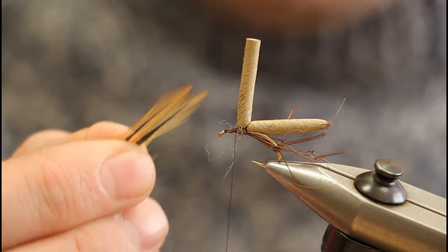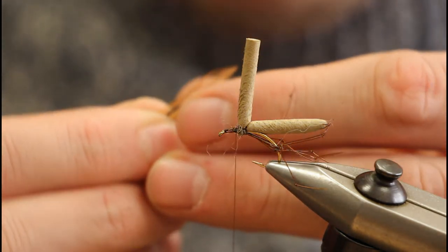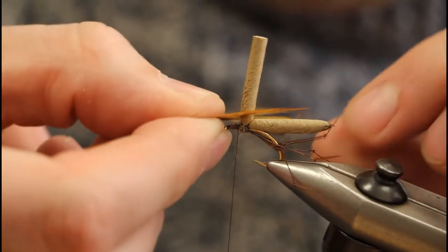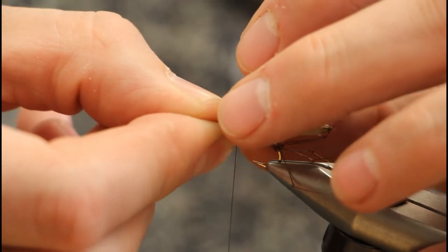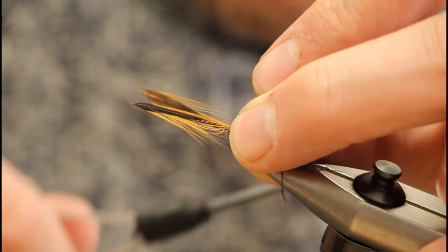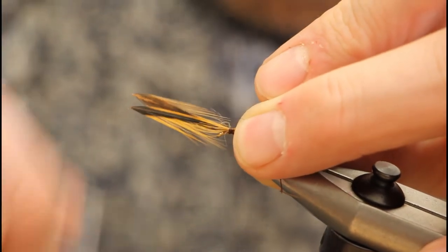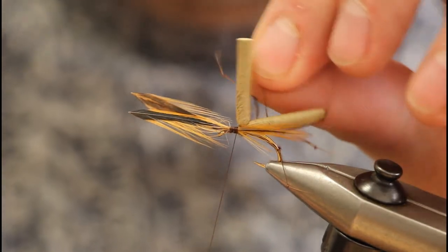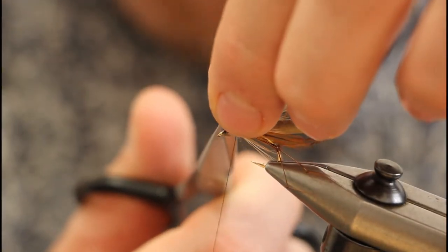I'm just using some red-brown Indian cock cape hackles. I generally want them just slightly shorter than the length of the body. So tie those in, nice and tight, and just remove the waste.